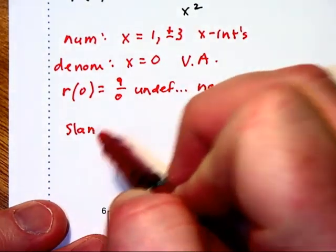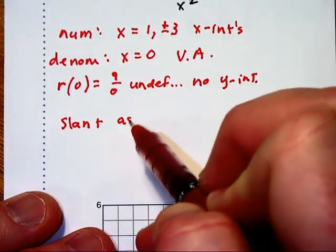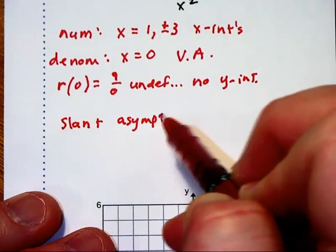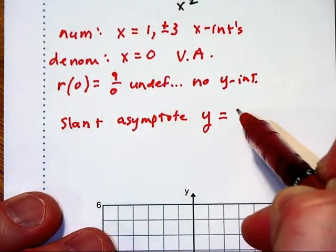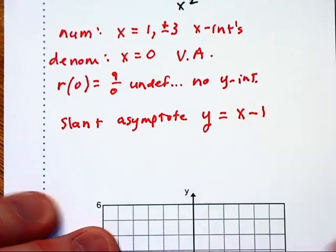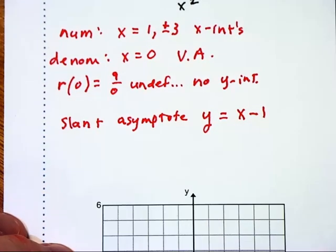And when we divide, we're going to have a slant asymptote at y equals x minus 1, and we'll ignore the rest of it because that's just the remainder.